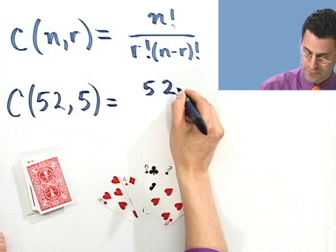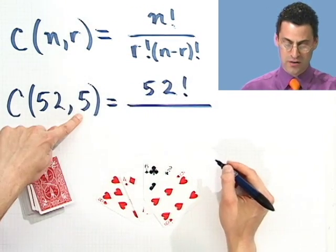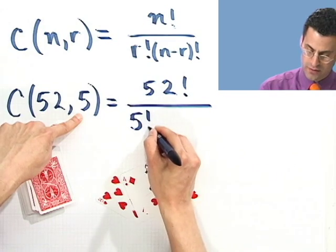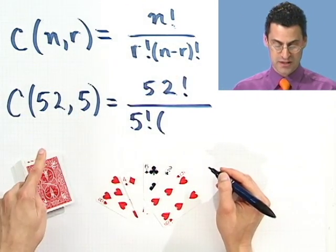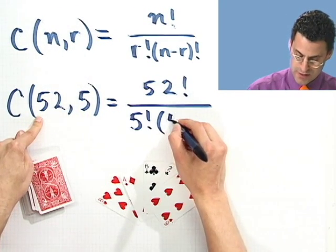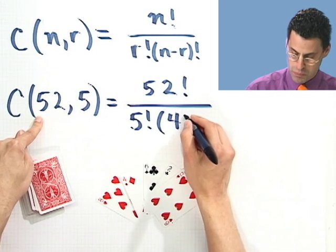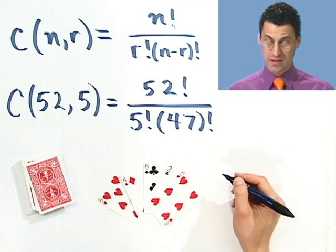Well, let's see. That would just be 52 choose five. And so that would be just C of 52 comma five. Fifty-two things, I want to choose five, but order doesn't matter. So that's going to be 52 factorial divided by, and I have r, r is five, so five factorial, multiplied by n minus r. So that's going to be what? That's going to be 52 minus five, which is going to be 47 factorial.